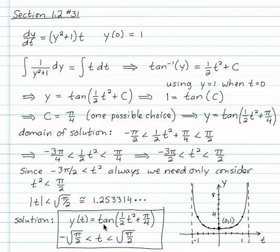Our solution is tangent of 1 half t squared plus pi over 4. And here's a sketch of the solution on the right-hand side with the initial condition 0,1 marked.